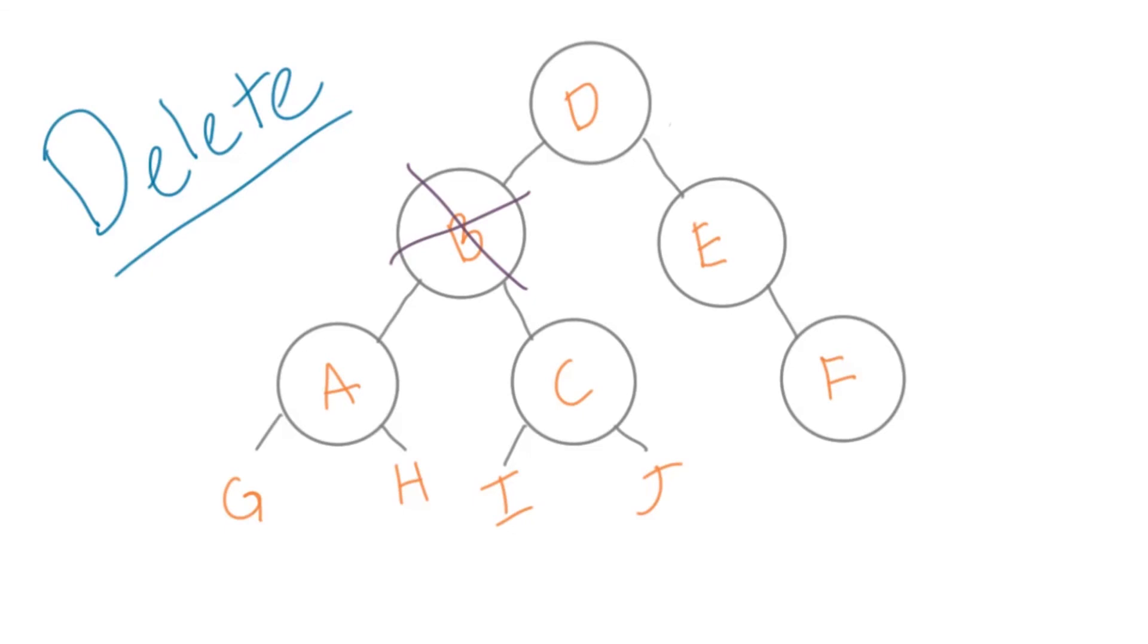What if both children also have two children? In the worst case, you'll need to keep traversing down the subtree until you hit a leaf. Since there's no real order requirement here, you can just put the leaf where your deleted node was without a problem.